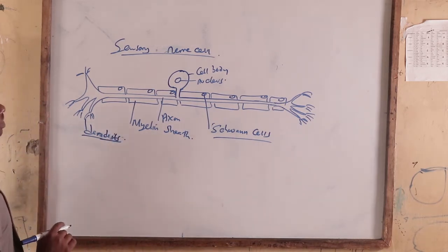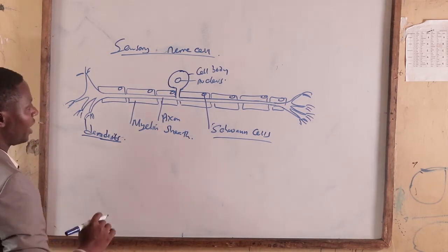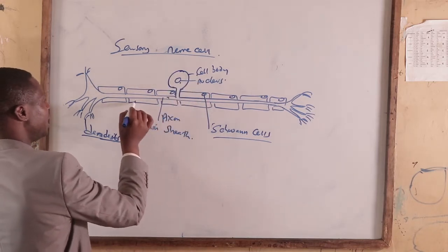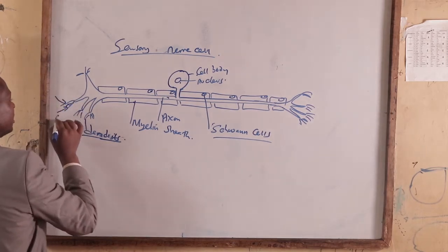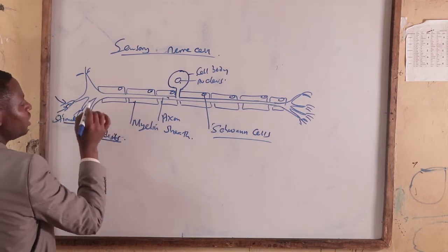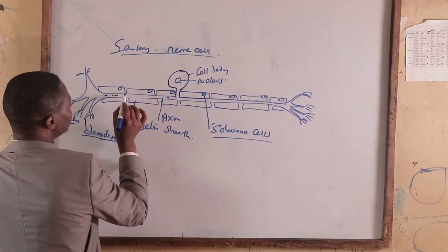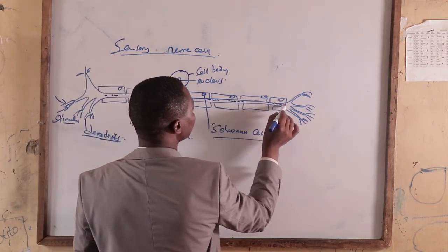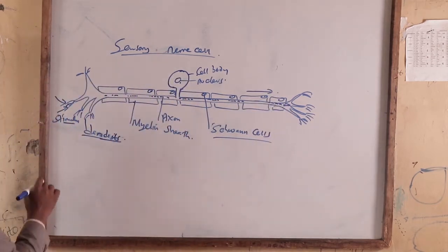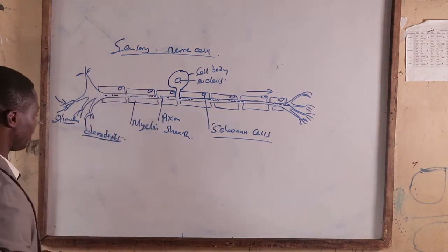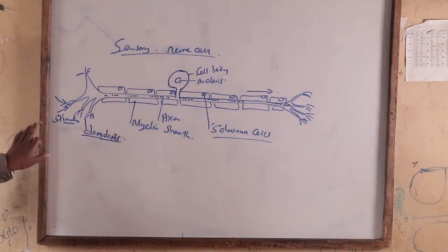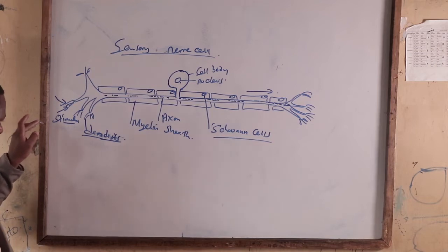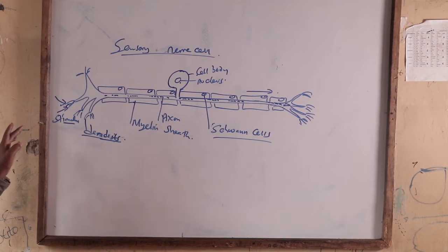That is the structure of a sensory neuron, having the cell body and nucleus. The dendrites receive the stimuli and convert it into an impulse that is conducted through the axon towards the central nervous system. For example, if I touch something hot, the skin is the sensory organ, and the high temperature is the stimulus.